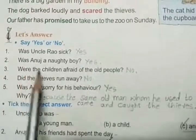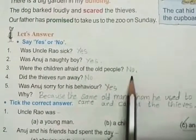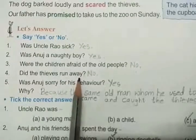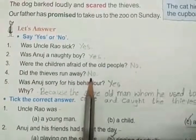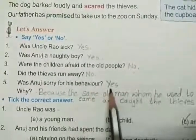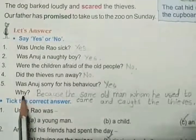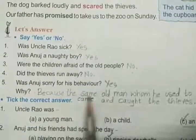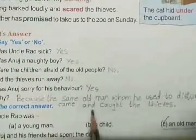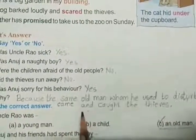Third one: Were the children afraid of the old people? No. Next, did the thieves run away? No. Fifth one: Was Anuj sorry for his behavior? Yes. He felt very bad for his behavior because the same old man whom he used to disturb came and caught the thieves. That is Uncle Rao. That's why he felt sorry.